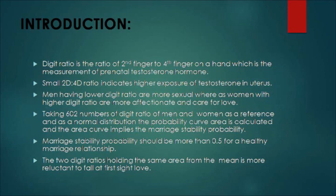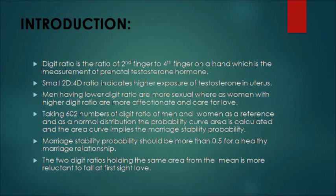We have taken 602 digit ratios of men and women as a reference. As a normal distribution, the probability curve area is calculated, and the curve area implies the marriage stability probability. This marriage stability should not be less than 0.5 — it should be more than 0.5 for a stable marriage relationship. The two digit ratios holding the same area from the mean are most reluctant to fall at first sight love.